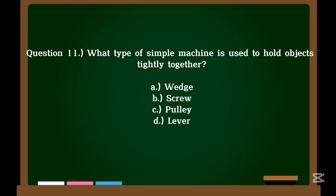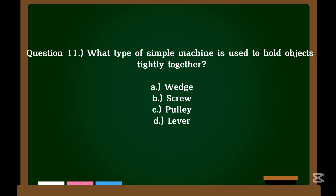Question 11. What type of simple machine is used to hold objects tightly together? A. Wedge. B. Screw. C. Pulley. D. Lever. Correct answer: B. Screw.